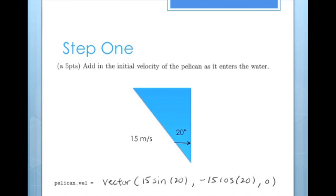So we can use trig properties to solve for x and y components of this velocity. This is a vector, so in VPython we have to use the correct formatting. The answer is shown at the bottom. Also, notice that the y component is negative because the pelican is traveling downward in the negative y direction.